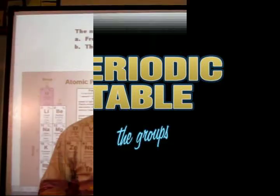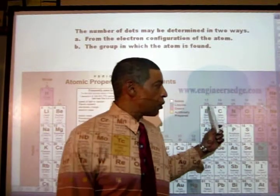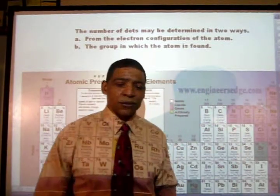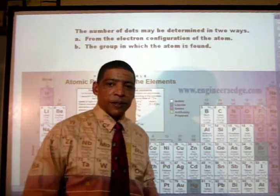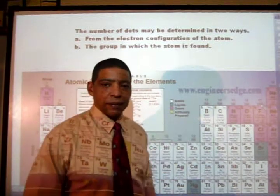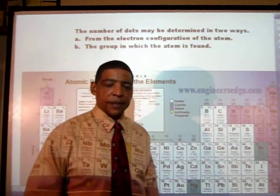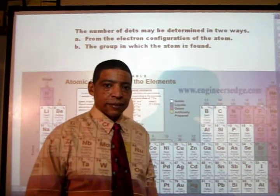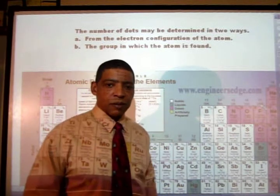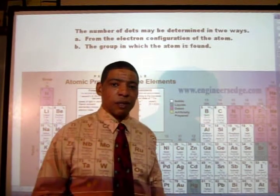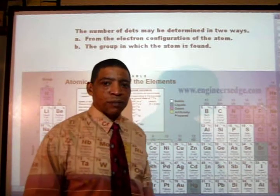On some periodic tables, the groups are indicated either by Arabic or Roman numeral. For example, the element boron is found in group 13, or Roman numeral 3A. The Roman numeral 3 indicates the number of valence electrons, thus the number of dots written in the Lewis symbol for boron.